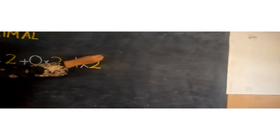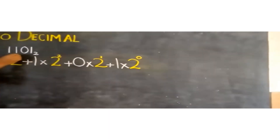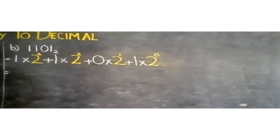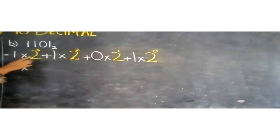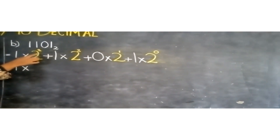Starting from the first number 2, you will place the power 0, 1, 2, and 3. Now we are going to solve the powers. One, written as it is, multiplied by 2 raised to the power 3. Two raised to the power 3 means we write 2 three times and multiply: 2 multiplied by 2 multiplied by 2 is equal to 8. So 2 raised to the power 3 is equal to 8.